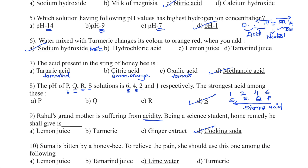Question number 10. Suma is bitten by a honeybee. To relieve the pain, she should use: Option A — Lemon juice, Option B — Tamarind juice, Option C — Lime water, Option D — Turmeric. The sting of a honeybee contains methanoic acid, so the sting is acidic. To neutralize this acid, we should use a basic solution. Therefore, the right answer is Option C — Lime water.